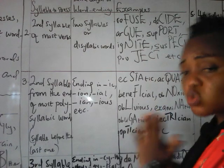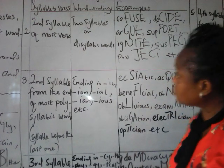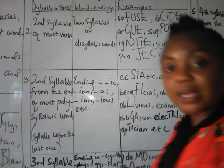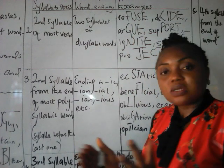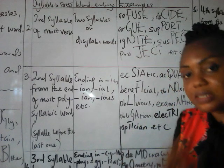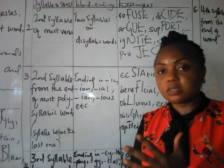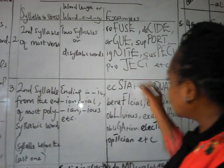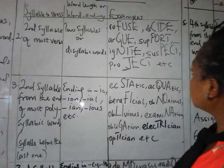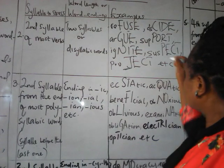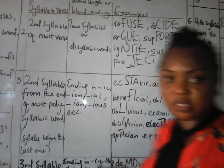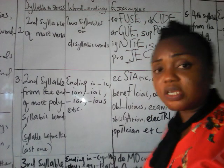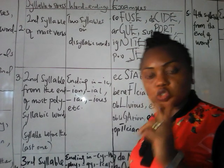In talking about these two-syllable words, we have what we call heteronyms. Heteronyms are words that have the same spellings but different meanings and pronunciations. If you look at some words here — for example, the word P-R-O-J-E-C-T — it can be pronounced in two ways depending on whether it is a noun or a verb.